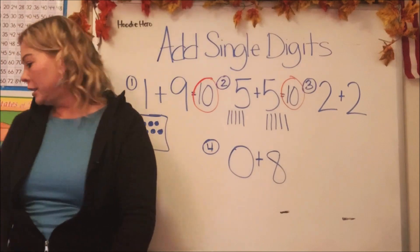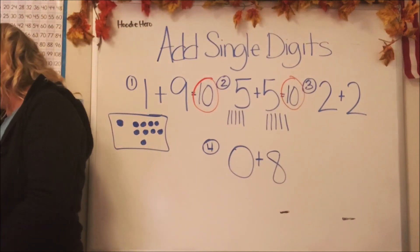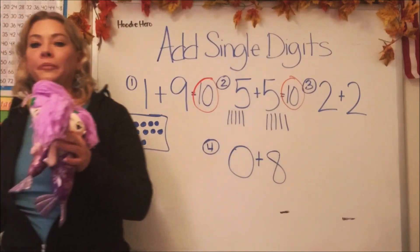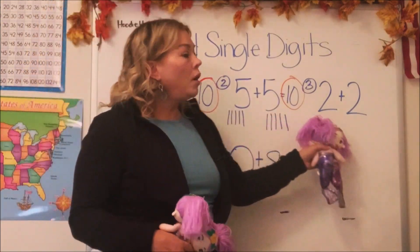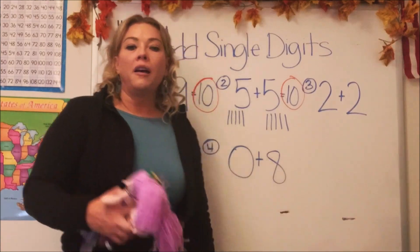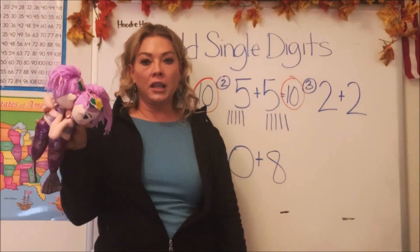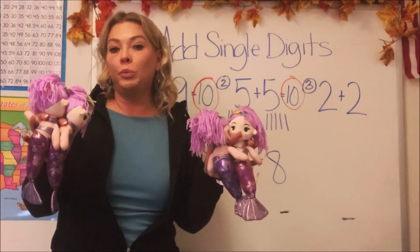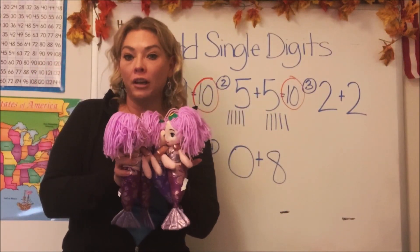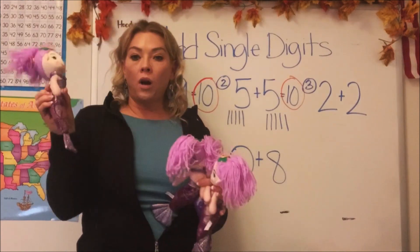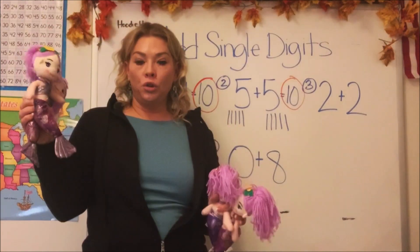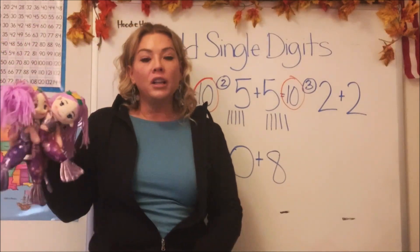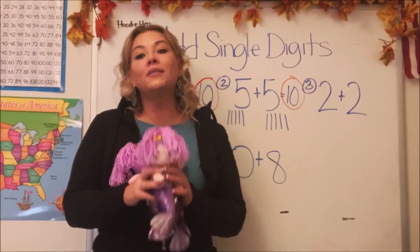All right, let's use a different manipulative, should we? Okay, I'm going to use these dolls. I have these little mermaid dolls. And it says two plus two. So I have two dolls plus two dolls. Now to find out what two plus two is, we're going to add them all together, aren't we? Here we go. One, two, three, four. Two plus two is four.